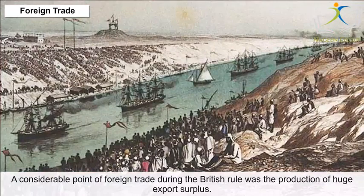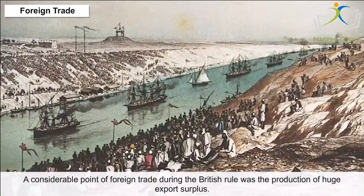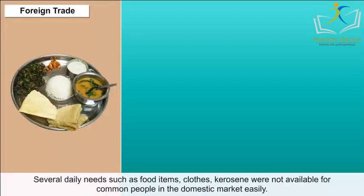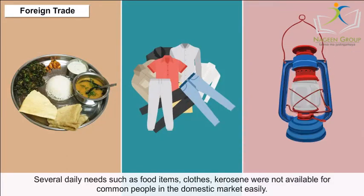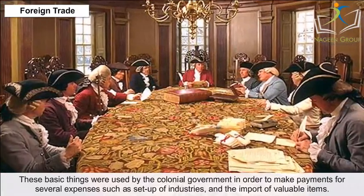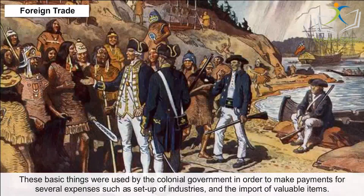A significant feature of foreign trade during British rule was the production of a huge export surplus, which drained the country's economy. Several daily necessities such as food items, clothes and kerosene were not easily available for common people in the domestic market. These basic goods were used by the colonial government to make payments for expenses such as setting up industries and importing valuable items.